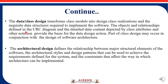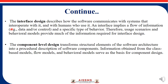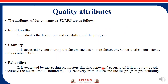The objective and relationship defines the CRC diagram and the detailed data content. The architectural design defines the relationship between major structural elements of the software. The interface design describes how the software communicates with the system. The component level design transforms structural elements of the software architecture into a procedural description of the software component.